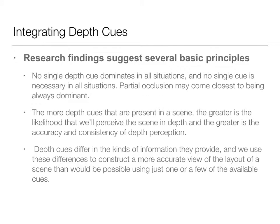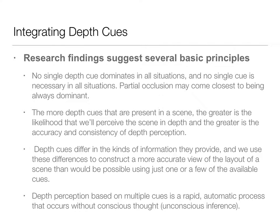Because these depth cues give us different kinds of information, they help us construct a really accurate view of the layout of the scene. Because they're all providing a different piece of the puzzle, we're able to get a really good image of what the depth scene really looks like. And this is done really, really rapidly. It's automatic, and it occurs without conscious thought. You're not consciously saying, I'm going to integrate these things. This is all happening on that unconscious level, in terms of dual level processing.